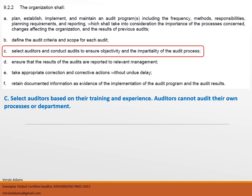AS 9.2.2(c) — select auditors and conduct audits to ensure objectivity and impartiality of the audit process. You need to select auditors based on their training and experience. You may train your auditors internally, or you may have auditors come in who already have their training. Very importantly, auditors cannot audit their own processes or department. To ensure objectivity and impartiality, auditors must not audit their own process or their own department.